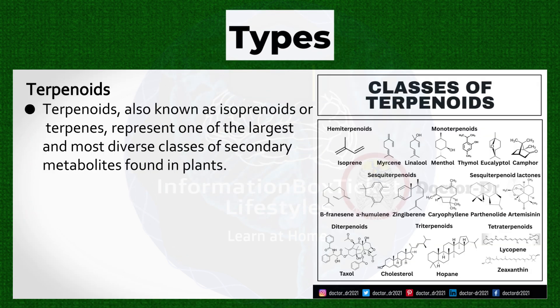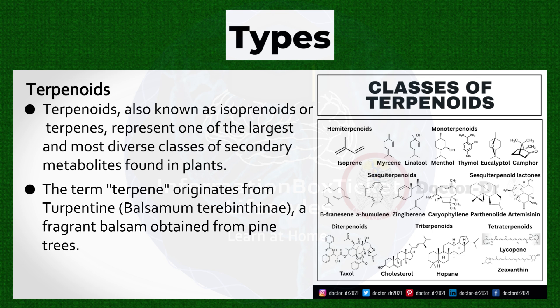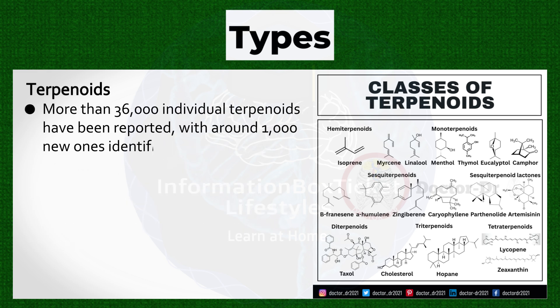Terpenoids, also known as isoprenoids or terpenes, represent one of the largest and most diverse classes of secondary metabolites found in plants. The term terpenoids originates from turpentine, a fragrant balsam obtained from pine trees. More than 36,000 individual terpenoids have been reported, with around 1,000 new ones identified each year.